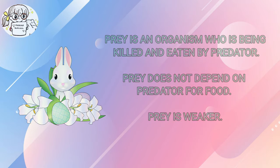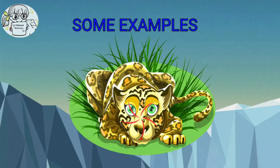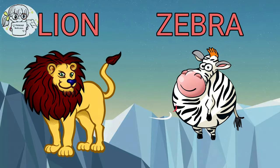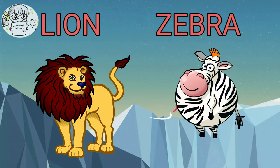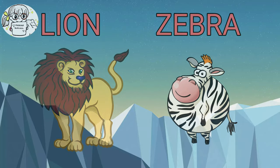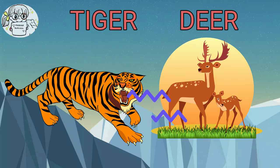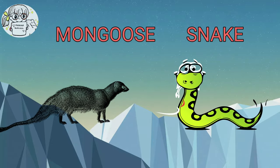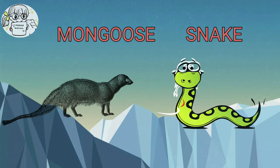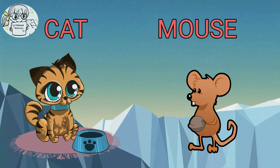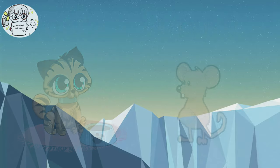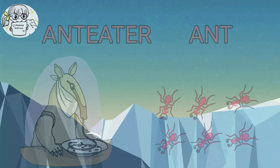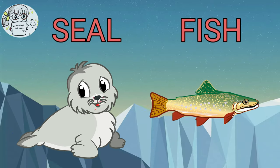Now let's see some examples of predator and their prey. Lion attacks zebra for his food. Similarly, tiger attacks deer. Mongoose attacks snake. Cat attacks mice. Anteater attacks ants.